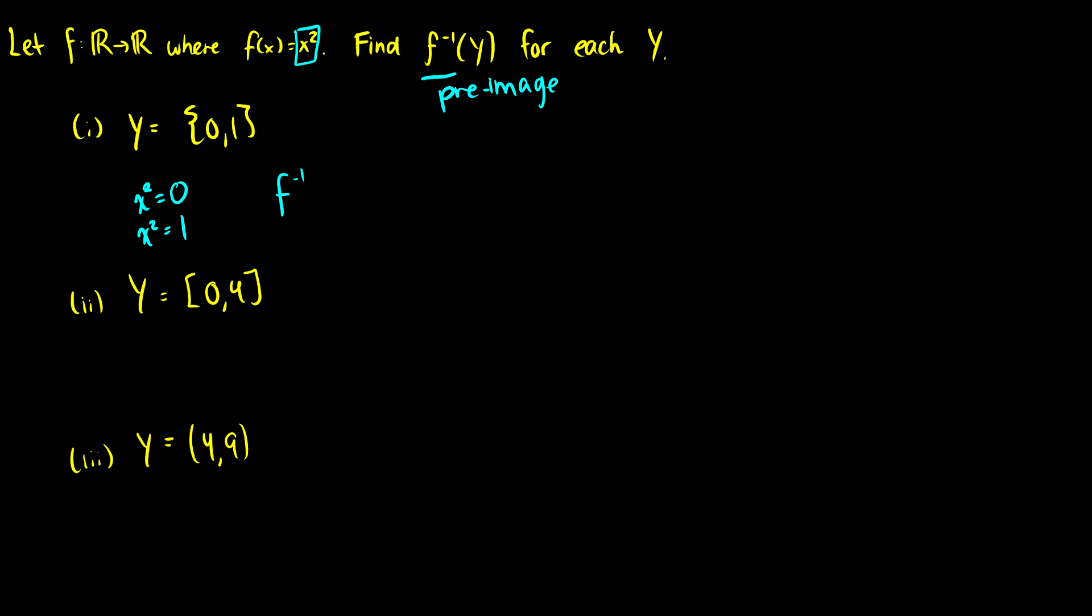So f⁻¹(Y), well, what squared gives you 0? Well, 0² gives you 0. What squared gives you 1? Well, (-1)² gets you 1 and 1² gives you 1. So our pre-image of Y is going to be {-1, 0, 1}.